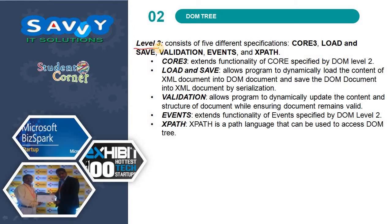Core 3 allows programmers to dynamically access and identify a range of content in the document. Level 3 consists of five specifications: Core 3, Load, Save, Validation, Events, and XPath. Core 3 extends the functionality of Core specified by DOM Level 2. Load and Save allows programs to dynamically load the content of an XML document into a DOM document and save the DOM document into an XML document by serialization. Validation allows programs to dynamically update the content and structure of a document while ensuring the document remains valid. Events extends functionality of events specified by DOM Level 2. XPath is a path language that can be used to access the DOM tree.